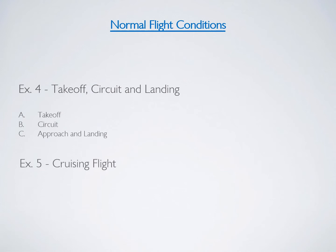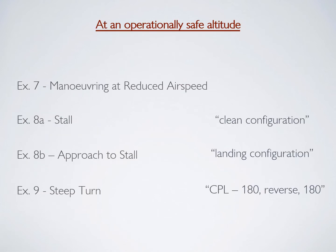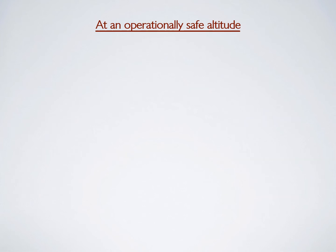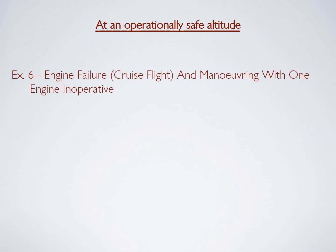Exercises four and five are slotted under normal flight conditions — these are the things you would normally do when flying the multi-engine. The control exercises are intended to make sure that you have a good handle on the airplane: you can maneuver at reduced airspeed, recognize a stall in both clean and dirty configurations, and also do a steep turn.